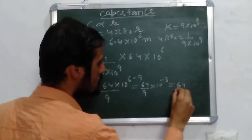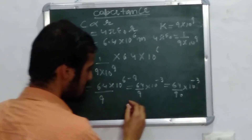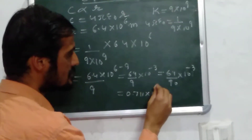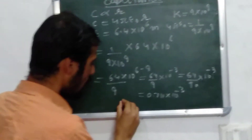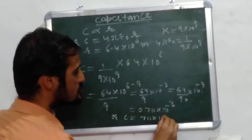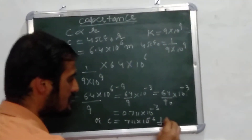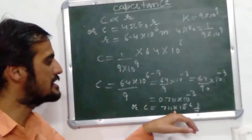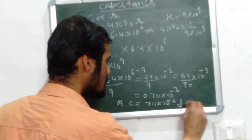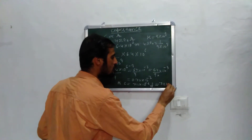Further solving: 64 upon 90, multiplied by 10 raised to the power minus 3, which comes out to be 0.711 × 10⁻³. Therefore C equals 711 × 10⁻⁶. Since 10 raised to the power minus 6 is microfarad, the capacitance of the Earth is 711 microfarad (711 μF).